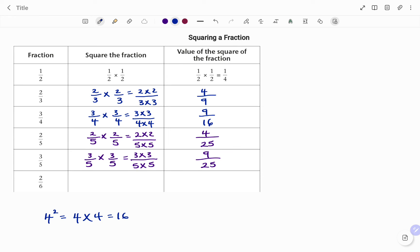For our last example, we have to square the fraction 2 over 6, that will be 2 over 6 times 2 over 6. For our numerator, 2 times 2, divided by our denominator, 6 times 6. 2 times 2 is 4, and 6 times 6 is 36. Thanks for watching!